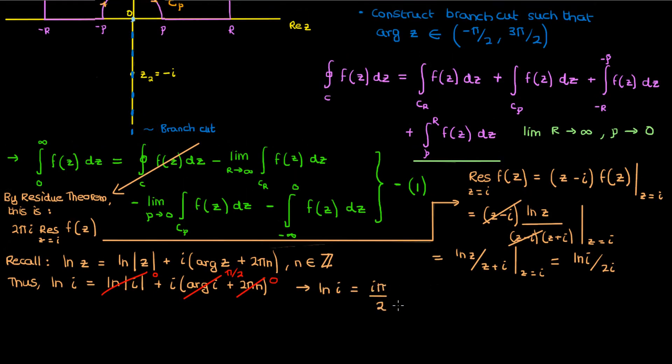If we go way back up, you'll see that the branch I created to make my natural log single valued takes in z's with an argument between negative pi by 2 and 3 pi by 2. So for z equals i, the only option for the argument that I have, which is also contained within this interval, is pi by 2. That's why I picked it, and that's why I crossed off the 2 pi n. I have a single valued branch. I'm not dealing with a multiple valued function anymore.